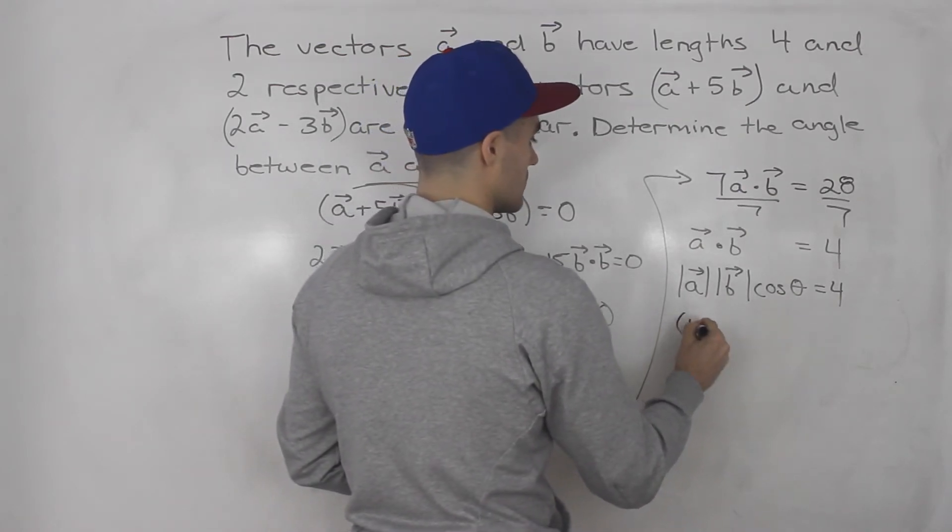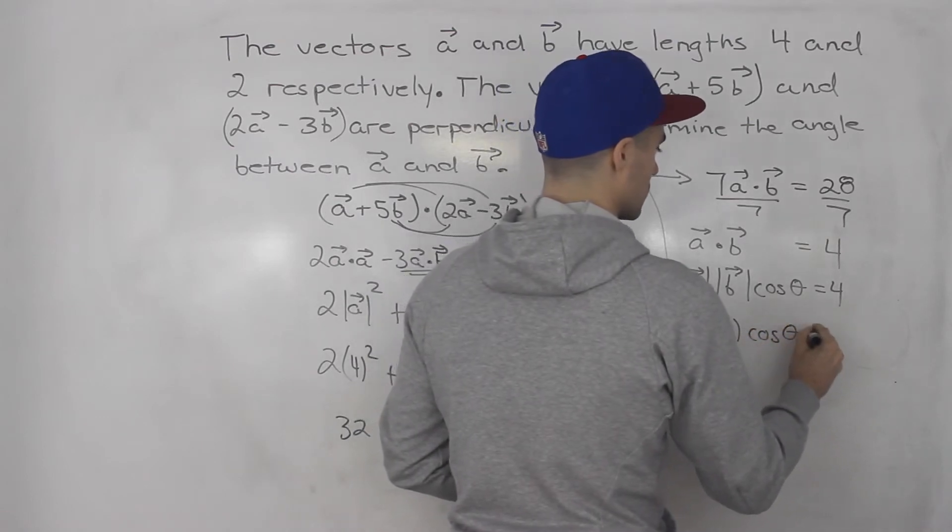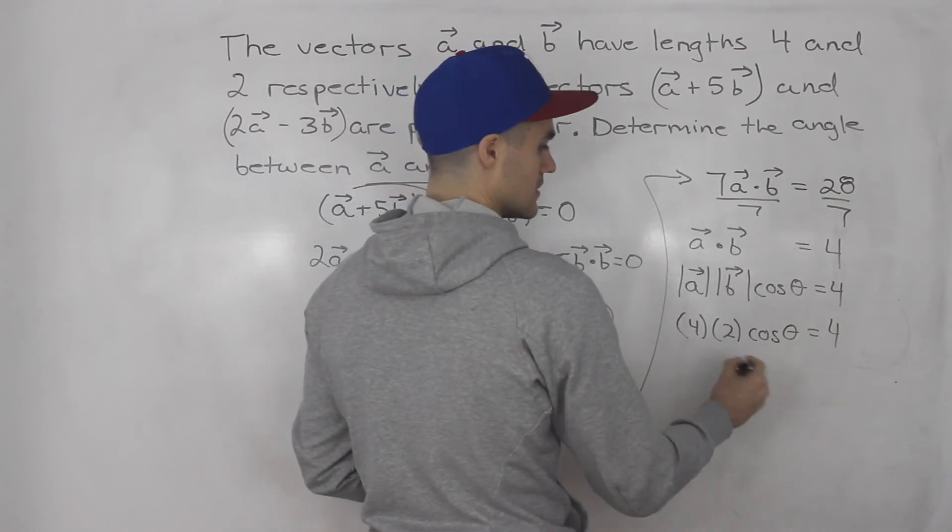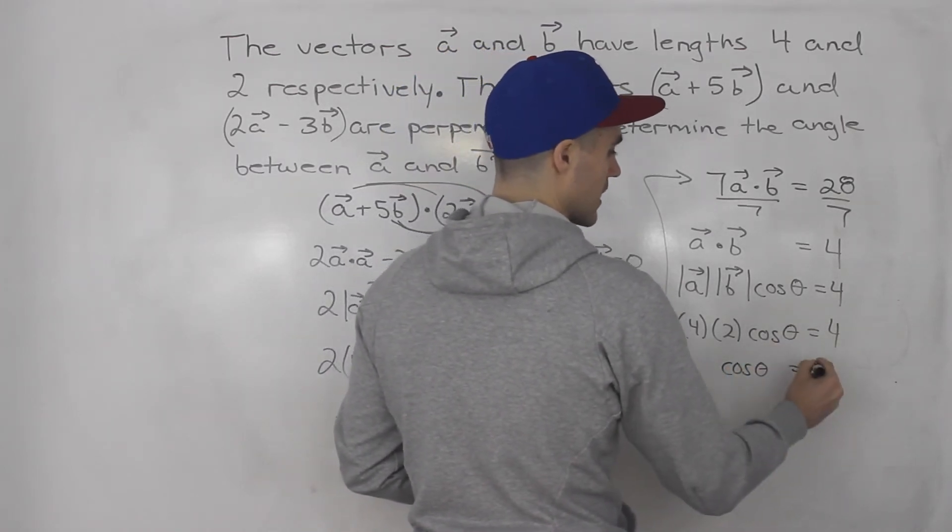Magnitude of a is 4. Magnitude of b is 2. Cos θ we are solving for. So 4. This is 8. Divide both sides by 8. So we'd have cos θ = 4 divided by 8 which is 1/2.